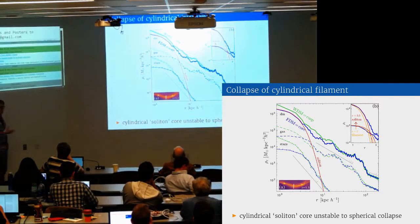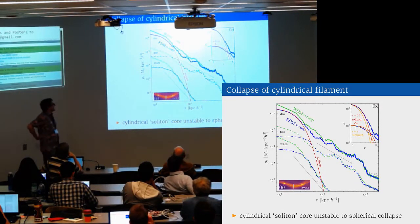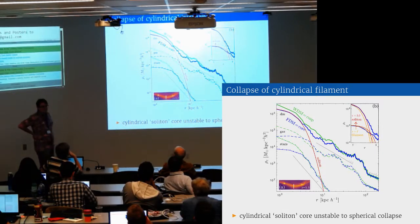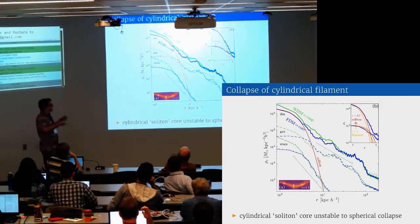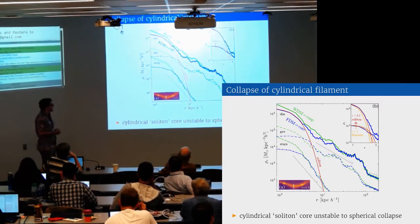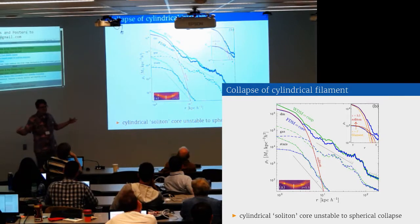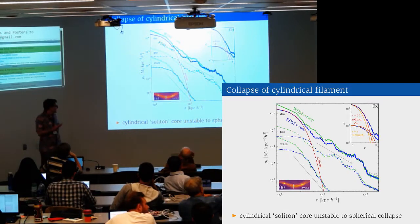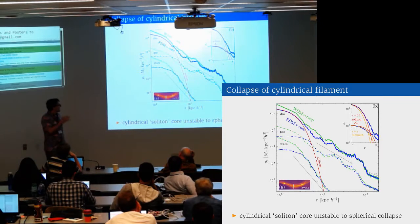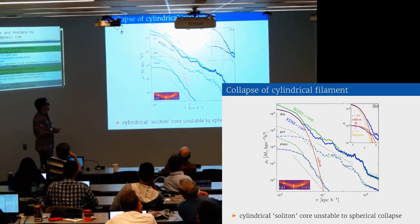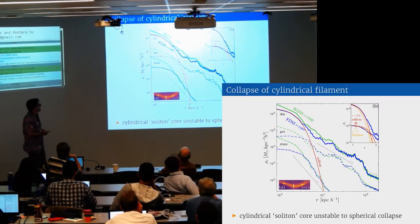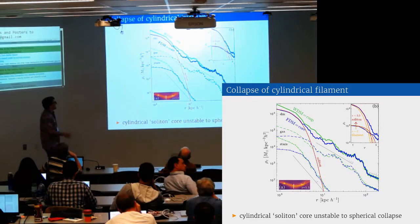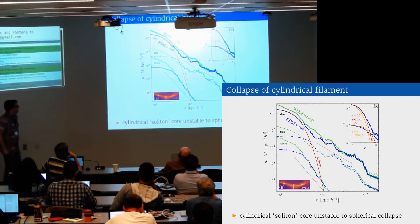If you look at the detailed structure of these filaments, there's a big difference between warm dark matter and fuzzy dark matter. The quantum pressure is actually responsible for supporting these central spine of these filaments. Your initial solution is cylindrical. In two dimensions, this soliton-like support is unstable. And then you end up fragmenting and producing soliton cores along the filament. And then importantly, the gas distribution follows the dark matter distribution very closely for these first structures.